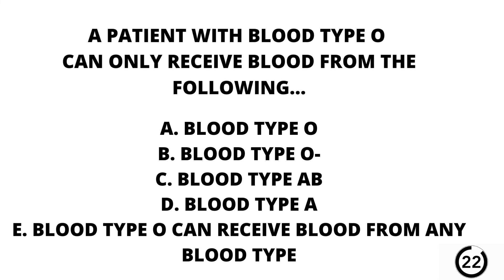Question number 29. A patient with blood type O can only receive blood from the following: blood type O, blood type O negative, blood type AB, blood type A. Or blood type O can receive blood from any blood type.